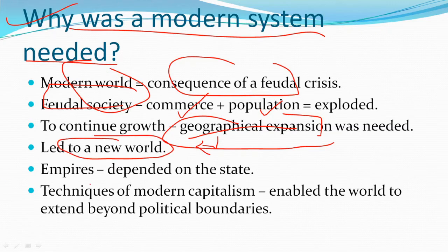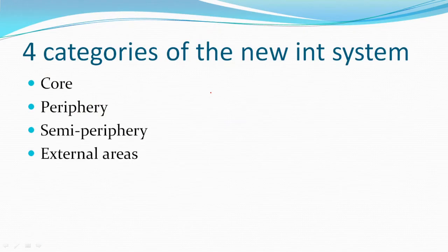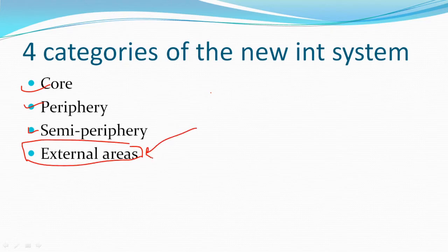Empires depended on states, and the techniques of modern capitalism enabled the world to extend beyond political boundaries. In this new international system there were four categories: first, the core; second, the periphery; third, the semi-periphery; and lastly, external areas — considered outside the system. The core was the most beneficiary region, the major beneficiary from the capitalist world economy, including states like England, France, and Holland.